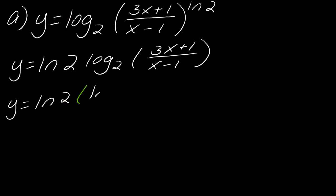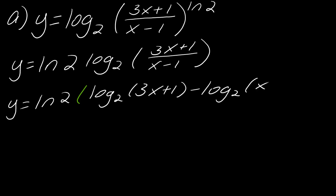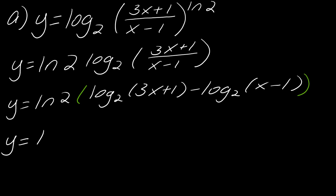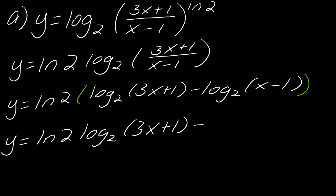So I've got now log base 2 of (3x + 1) minus log base 2 of (x − 1). Notice I still have to apply the natural log of 2 to the entire expression, because that's what it was meant for. Now, just to be nice and thorough, I'm going to go ahead and distribute this in. Now I can finally take the derivative. I've simplified this as far as I can, and I think this will be much easier to differentiate than the original form.